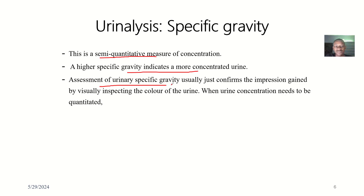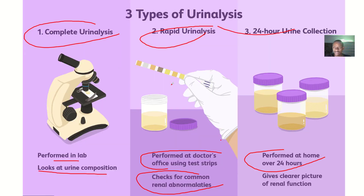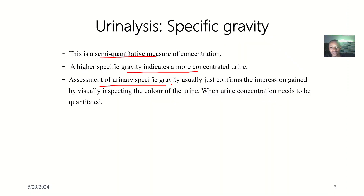The assessment of urinary specific gravity usually just confirms the impression gained by visually inspecting the color of urine. If you have a concentrated urine, from inspecting the urine you should be able to differentiate it from a clear-colored urine. So you are doing the specific gravity just to confirm what you observe with your eyes.